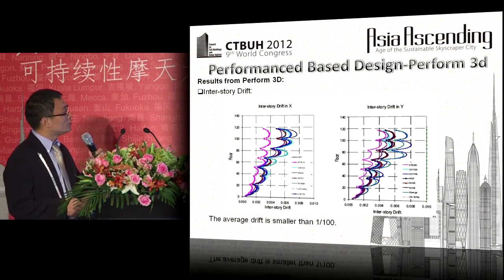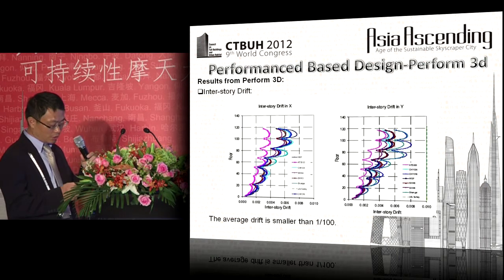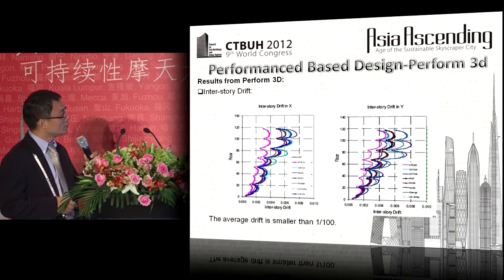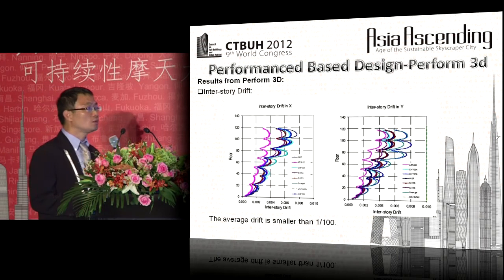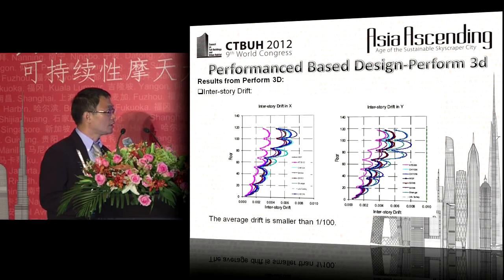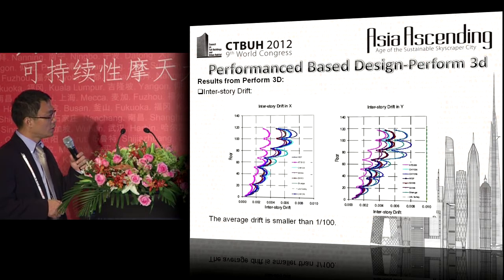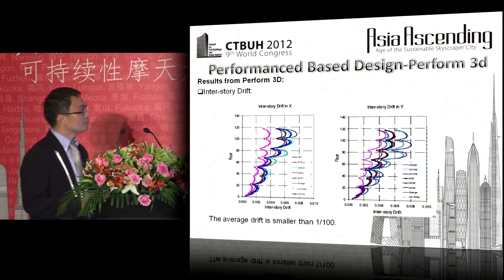Looking at the Perform 3D PBD results, we are staying well within the 1/100 range. We observe both smaller and larger wave responses. For supertall buildings, stronger reactions appear at the upper part and smaller ones at the lower part. The average interstory drift is smaller than 1/100.